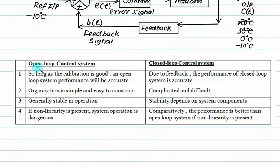The differences between open loop and closed loop: As long as calibration is good, open system performance will be accurate. It entirely depends on what controller the washing machine has. Due to the feedback system, closed loop performance is always accurate. Organization in open loop is easy and simple, whereas closed system is complicated. Normally open systems are stable.